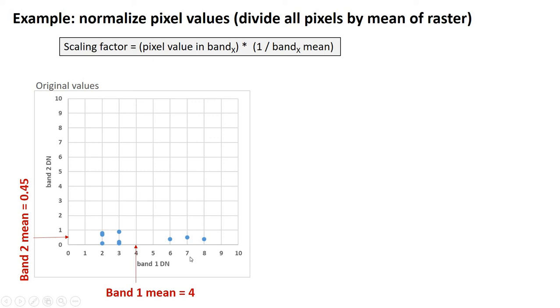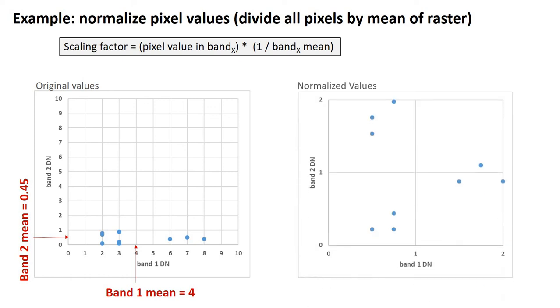So, what we're going to do is, what if we divide all these pixels by their means? We rescale them, essentially. So, the band 1 values all get divided by 4. That makes the numbers much smaller. So, notice this pixel that had a value of 8, now has a value of 2. All those numbers have been shrunk.